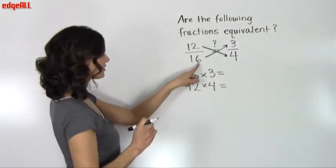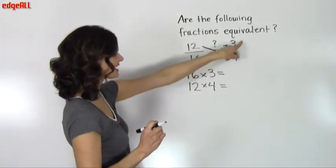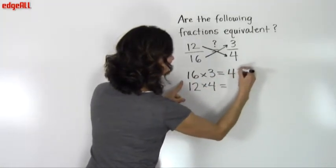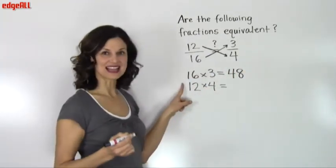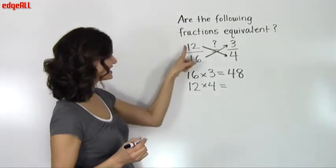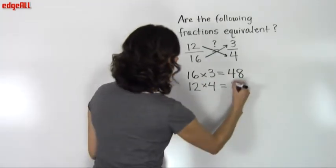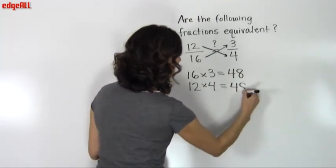So I'm going to start with 16 times 3. 16 times 3 equals 48. And my second multiplication is 12 times 4, and 12 times 4 also equals 48.